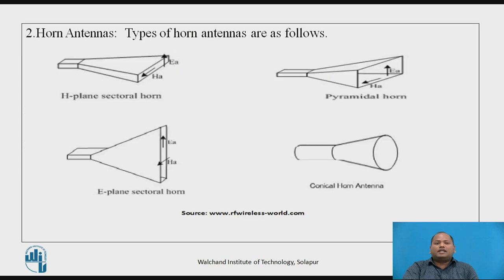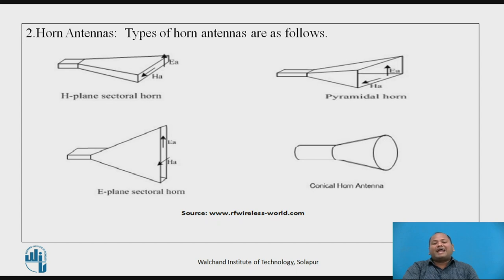Now let us look at how the antennas appear. You can see in the slide the H-plane sectorial horn antenna, pyramidal horn antenna, and E-plane sectorial horn antenna. The E-plane or H-plane refers to the polarization of the electromagnetic wave. Horn antennas are available in different forms, including the conical horn antenna, which you can commonly find on mobile towers.